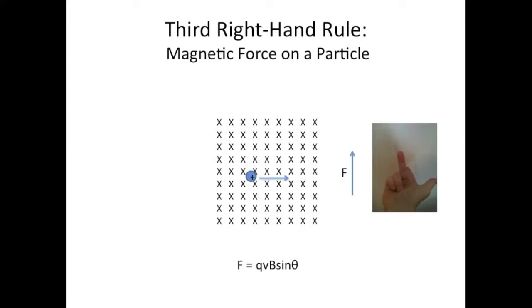So the sine theta parts of this equation, F equals QVB sine theta, indicates that only the perpendicular component of the particle's velocity factors into the force. This is true any time you see an equation with sine in it. Think about torque. What this means is that if the velocity of the particle, or in the previous example the direction of the current, is parallel or anti-parallel to the B field, the force will be zero. There won't be one. So watch out for that.